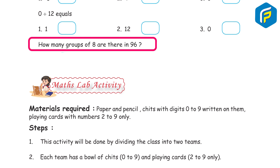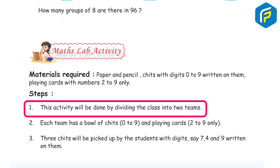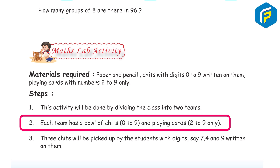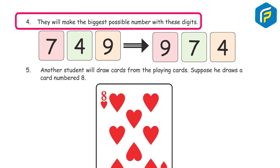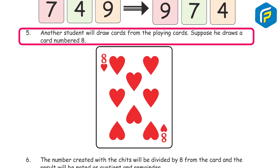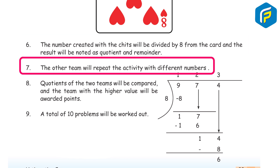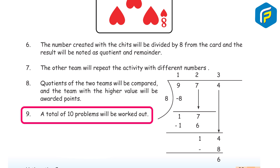Maths lab activity. Materials required: paper and pencil, chits with digits 0 to 9, and playing cards numbered 2 to 9 only. Steps: 1) Divide the class into 2 teams. 2) Each team has a bowl of chits 0–9 and playing cards 2–9. 3) Students pick 3 digit chits, say 7, 4, and 9, and make the biggest possible number. 4) Another student draws a playing card, say 8. 5) The number made with the chits is divided by the card number, and the quotient and remainder are noted. 6) The other team repeats the activity with different numbers. 7) The team with the higher quotient value earns points. 8) A total of 10 problems will be worked out.